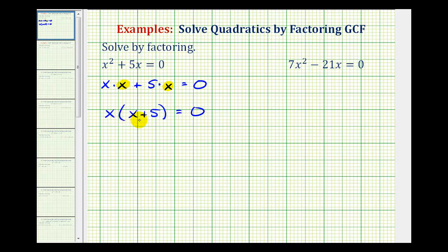And now we can use the zero product property to solve this equation. Since this product is equal to zero, either the first factor of x must equal zero, or the second factor of x plus 5 must equal zero.